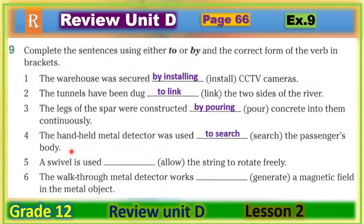Number five: the answer is 'to allow.' Number six: 'The walkthrough metal detector works ___ generating a magnetic field.' The answer is 'by generating.' Great job, students! Let's move to the next slide.